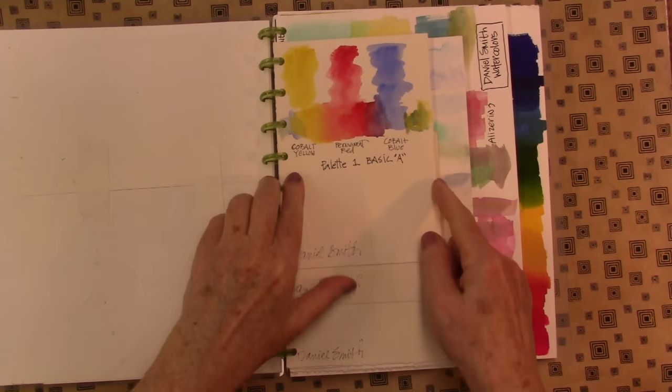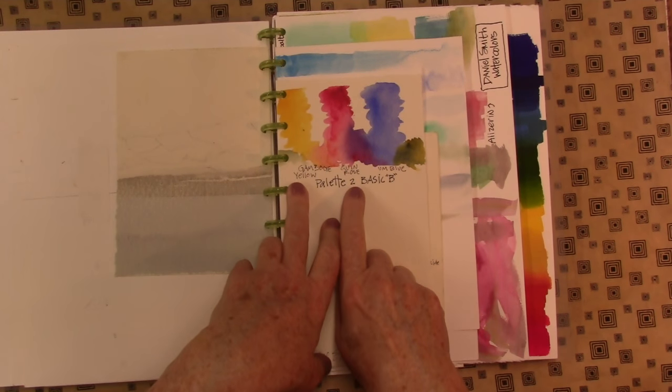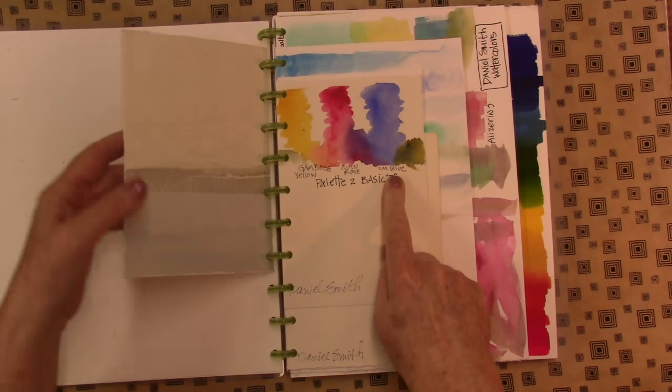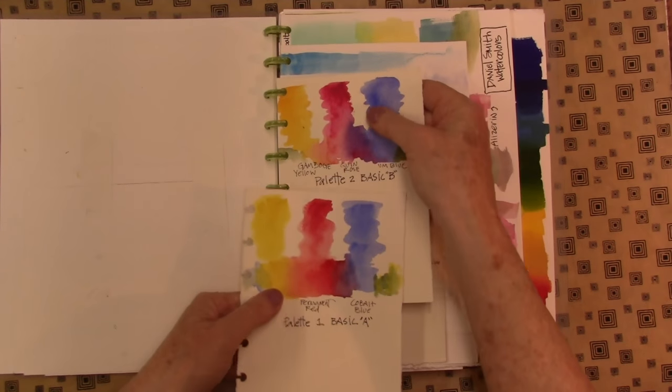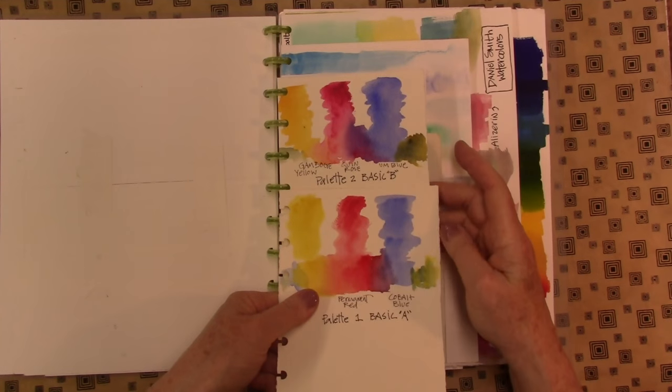And you can see the range of color you can get from that very basic color. This is a gamboge yellow, quin rose, and ultramarine blue. These two palettes, these two color sets together are a really excellent basic palette.